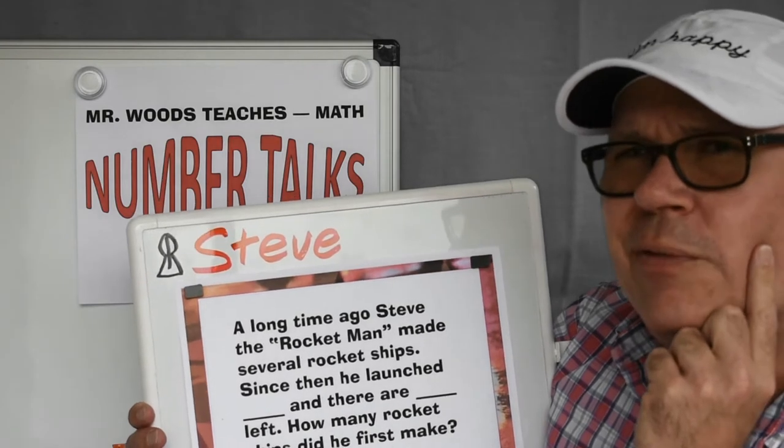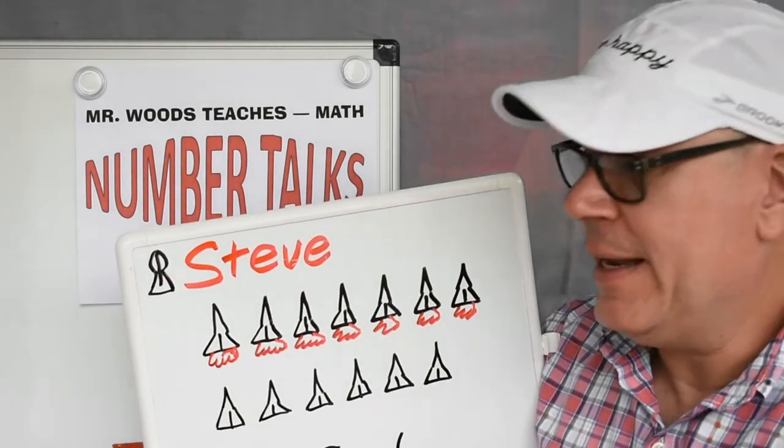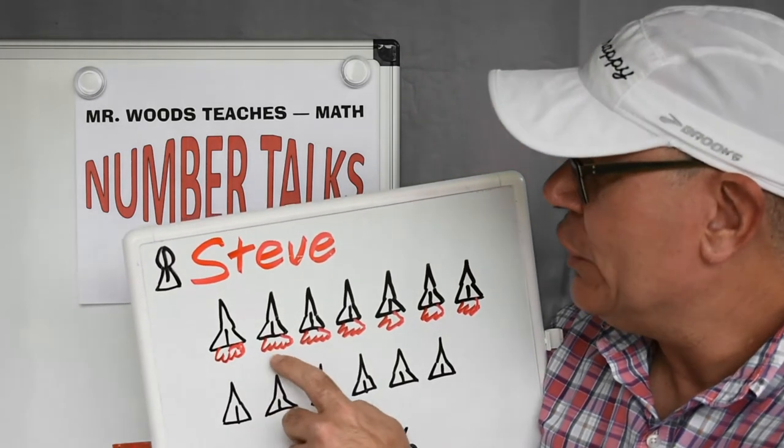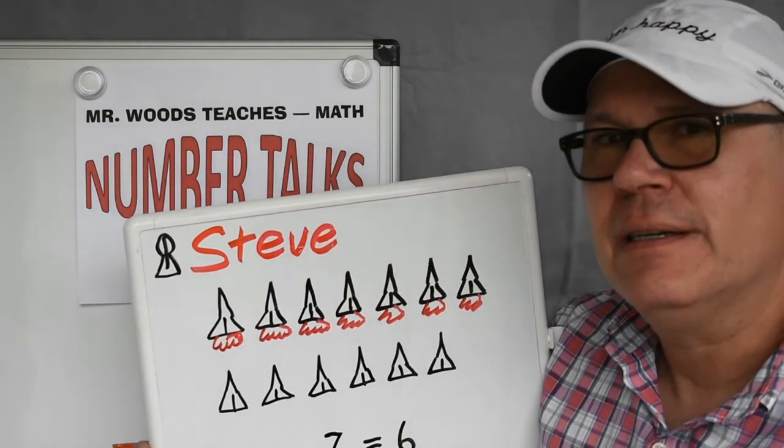Hmm, how would you figure that out? Okay, so Steve, the Rocket Man, he launched one, two, three, four, five, six, seven rocket ships.